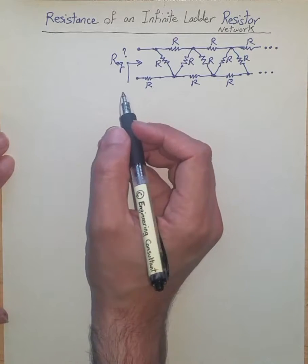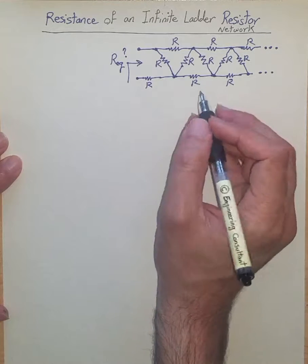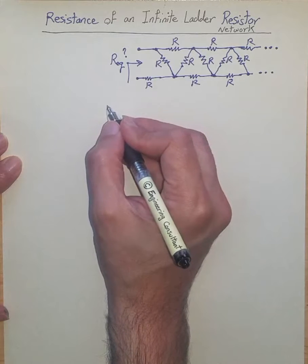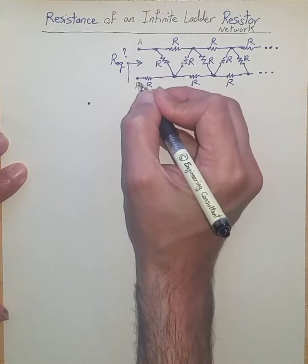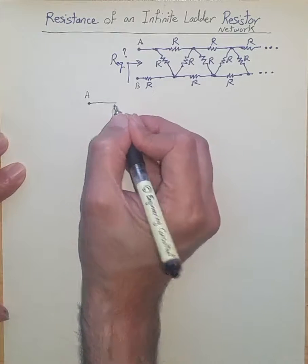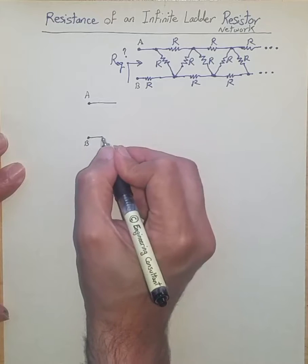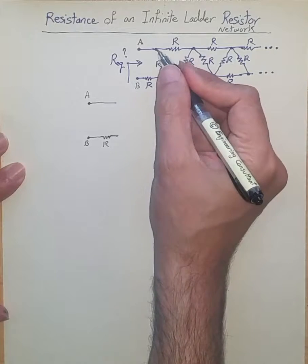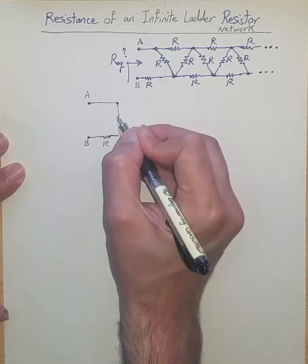The first thing we need to do is a little simplification of the shape of this resistive network, which can also be sketched like this. Starting from node A and node B as input nodes, for node B I'm going to keep resistor R, and of course between this point and this point we have resistor R.